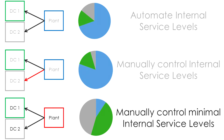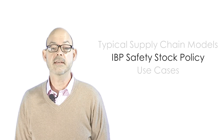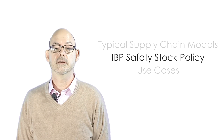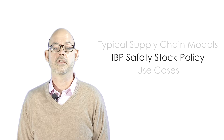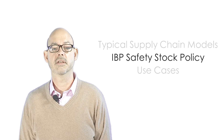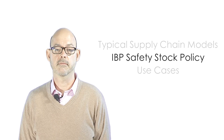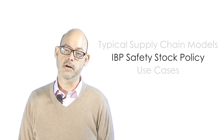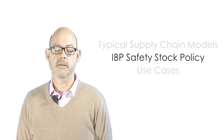What if I only have enough warehouse capacity to hold safety stock for my own external customers, or different product groups require different internal service levels? IBP safety stock policy is used to control these internal service levels, and thus allows you to hold lower safety stock in some locations, and more in others, based on their constraints.